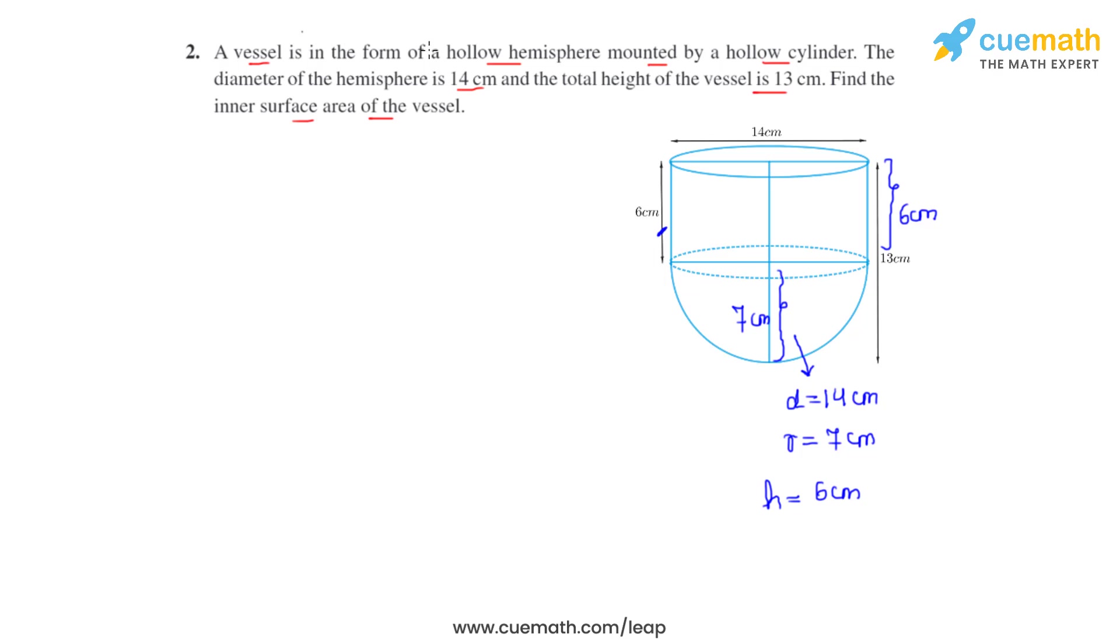Now as asked in the question, we have to find the inner surface area of the vessel. As can be seen from the figure, we can write that the inner surface area of the vessel will be a combination of curved surface area of the vessel, and both of these shapes are hollow. Now the formula to find the curved surface area of a hemisphere is 2πr².